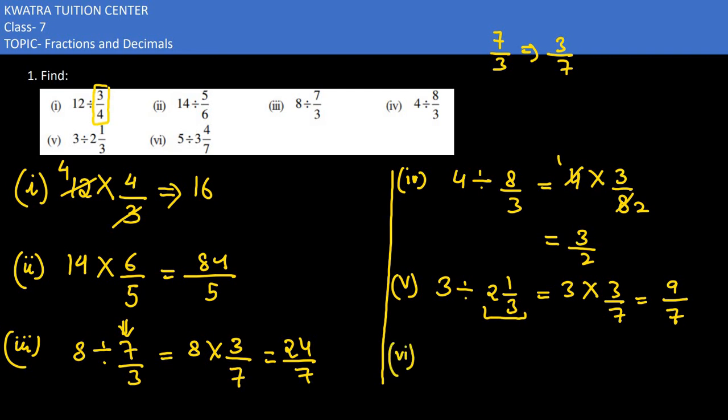Now in the sixth part, we have 5 divided by 3 and 4 by 7. Now 5 divided by 3 and 4 by 7, first we will change this. This would be 3 into 7 is 21, plus 4 is 25. So we have 25 by 7. Now 5 divided by 25 by 7, you have to change it in reciprocal form. Multiplication sign, 7 up and 25 is down. So 5 and 25 can be cancelled. You would get 7 by 5 as the answer.